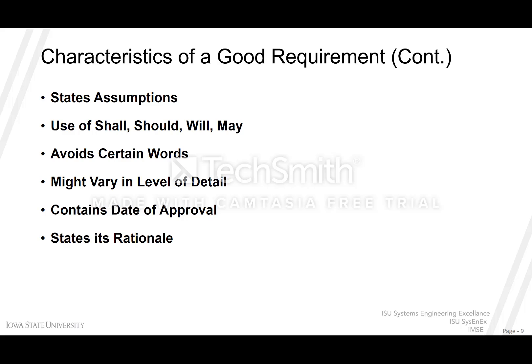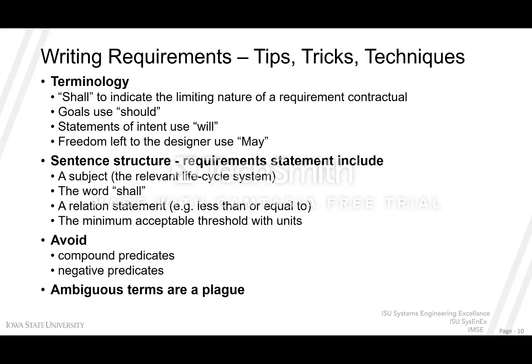A requirement contains the date of approval and states its rationale. Explaining the intent of the requirement is important for understanding trade-offs, especially if new people come in to support the system after requirements development. Many systems have long development cycles, and what seems intuitive during discussion may not be recalled three months later. Stating the rationale explains why the requirement was written that way and identifies what would need to be challenged to make a trade-off. Goals use 'should' because it's a preference, not absolute; statements of intent use 'will'; and freedom left to the designer uses 'may.'